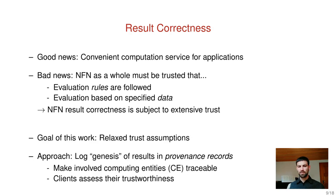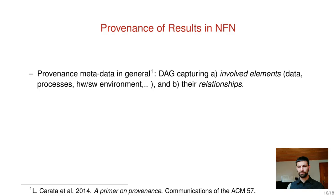The goal of this work is to relax these trust assumptions. Our approach is to log the genesis of results in provenance records. The benefit for clients is that they can trace the compute entities involved in the computation of a result and assess on this basis if a result should be trusted or not. Provenance in general is a directed acyclic graph capturing involved elements in a computation, which can be data, processes, software and hardware environments, and the relationships among these.